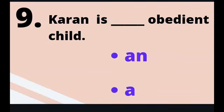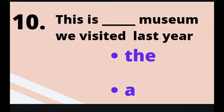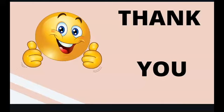Question 9: Karin is ___ obedient child. Answer: Karin is an obedient child. Question 10: This is ___ museum we visited last year. Answer: This is the museum we visited last year. Students, I hope you have understood and scored well in this exercise. If not, please go through the video once again and try to understand the different types of articles — the, a, and an — and where they are used. Once you have understood the concept, retry the exercise. Thank you for participating. I hope you enjoyed. Take care and happy learning. God bless you all.